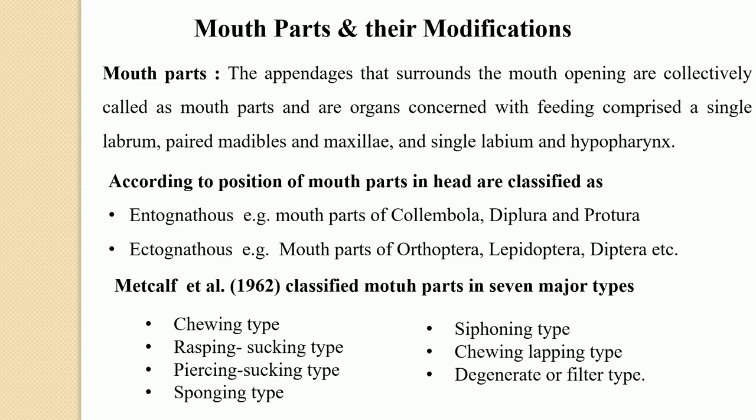The hypopharynx is primarily formed from a fusion of a pair of lateral lobes referred to as superlingui, with a median lobe known as the lingua. This condition is found in pterygote insects. While in apterygote insects, the lingua and superlingui are free from each other — this is the key difference in the hypopharynx between pterygote and apterygote insects.